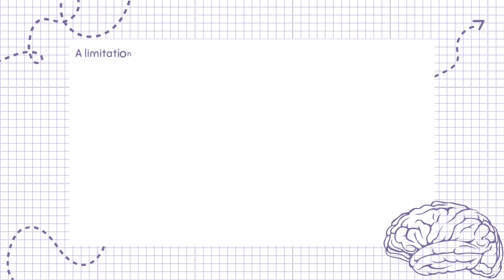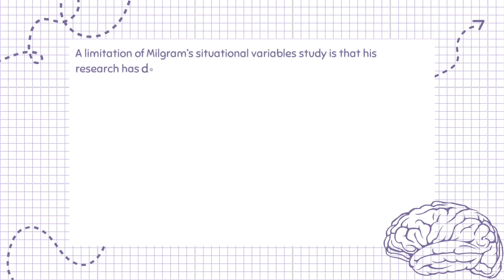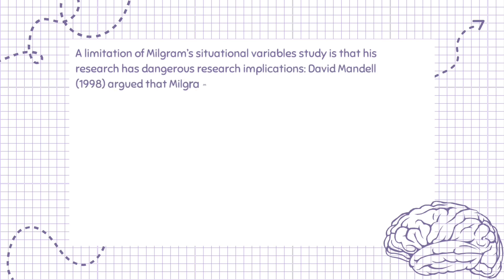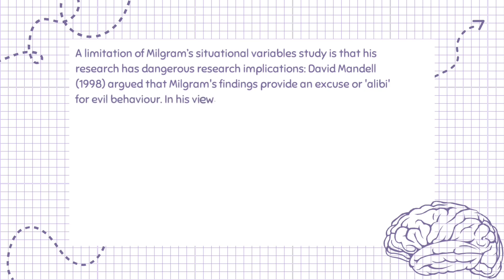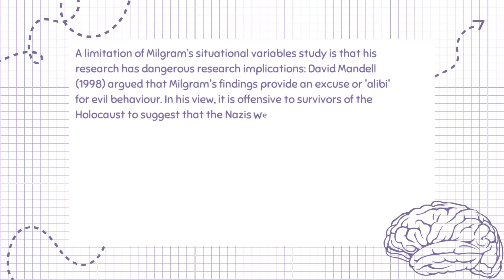A limitation of Milgram's situational variable study is that his research has dangerous research implications. David Mandel (1998) argued that Milgram's findings provide an excuse or alibi for evil behavior. In his view, it is offensive to survivors of the Holocaust to suggest that the Nazis were simply obeying orders.